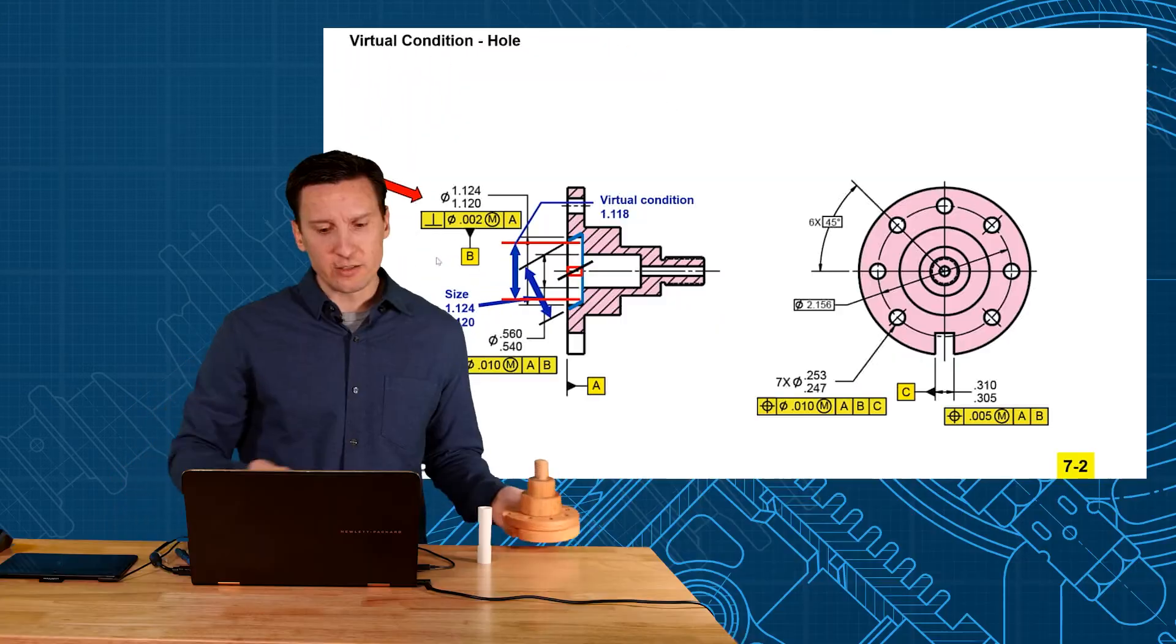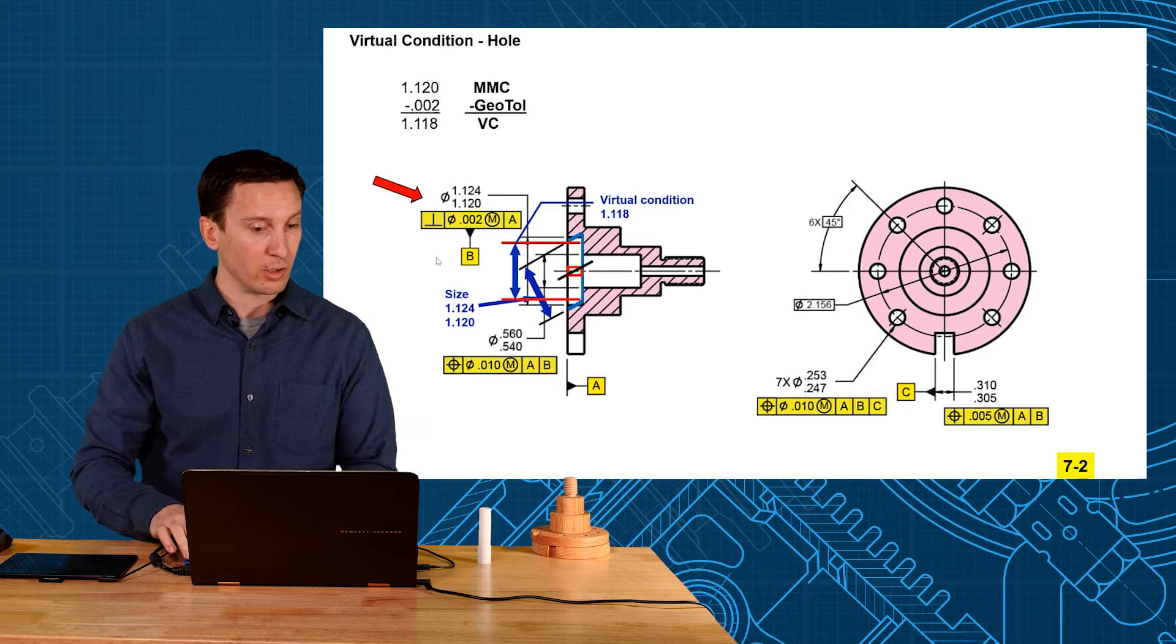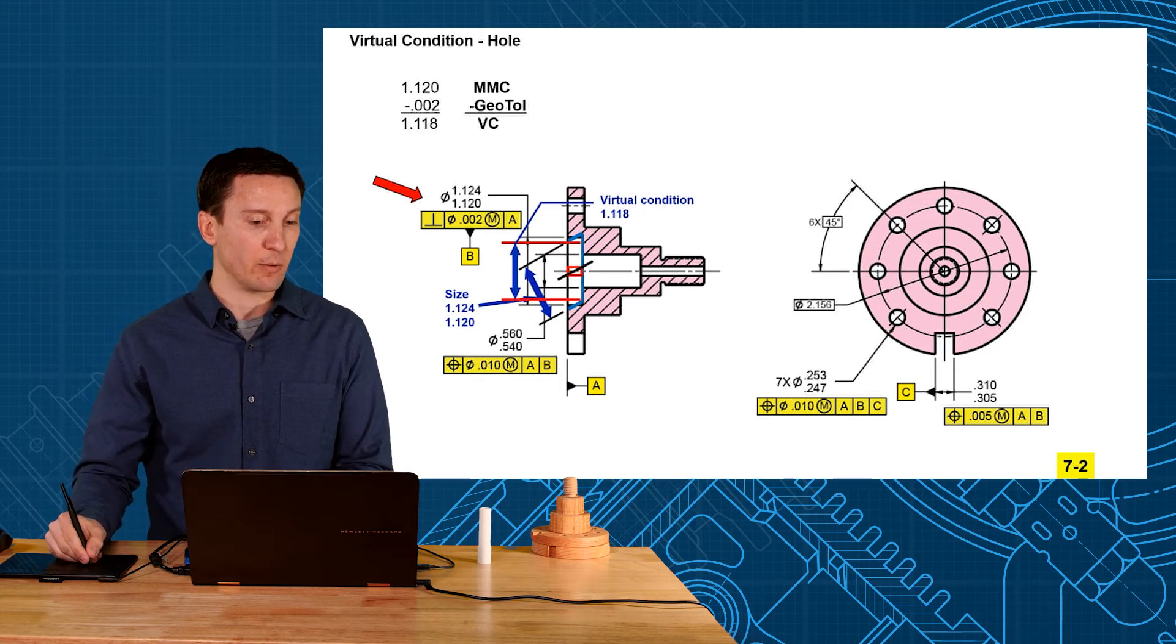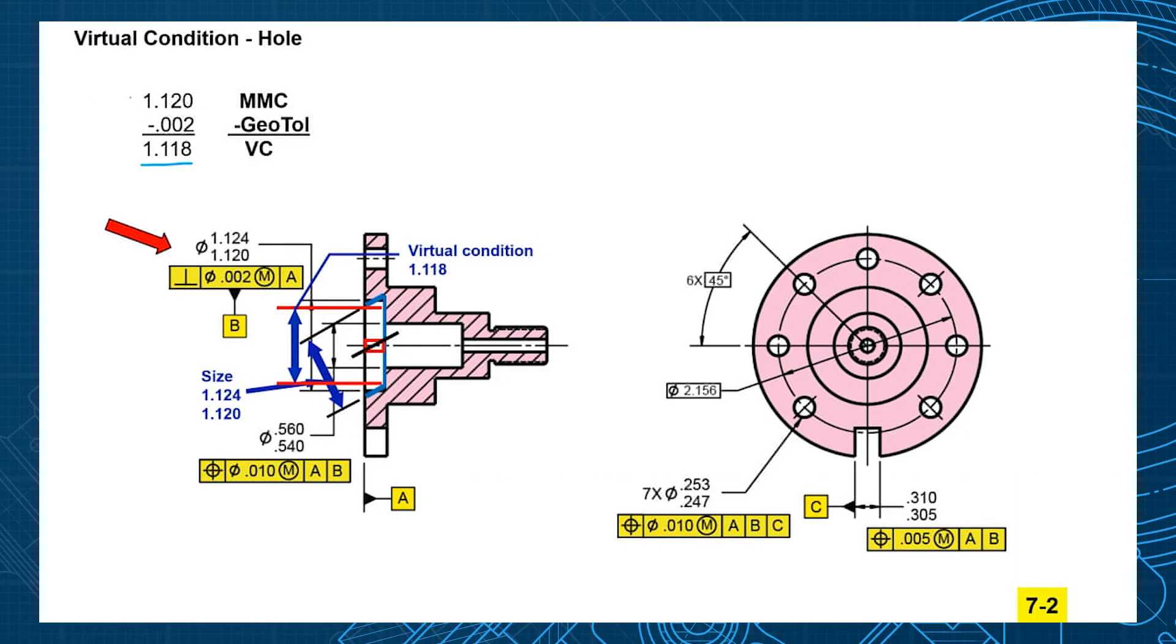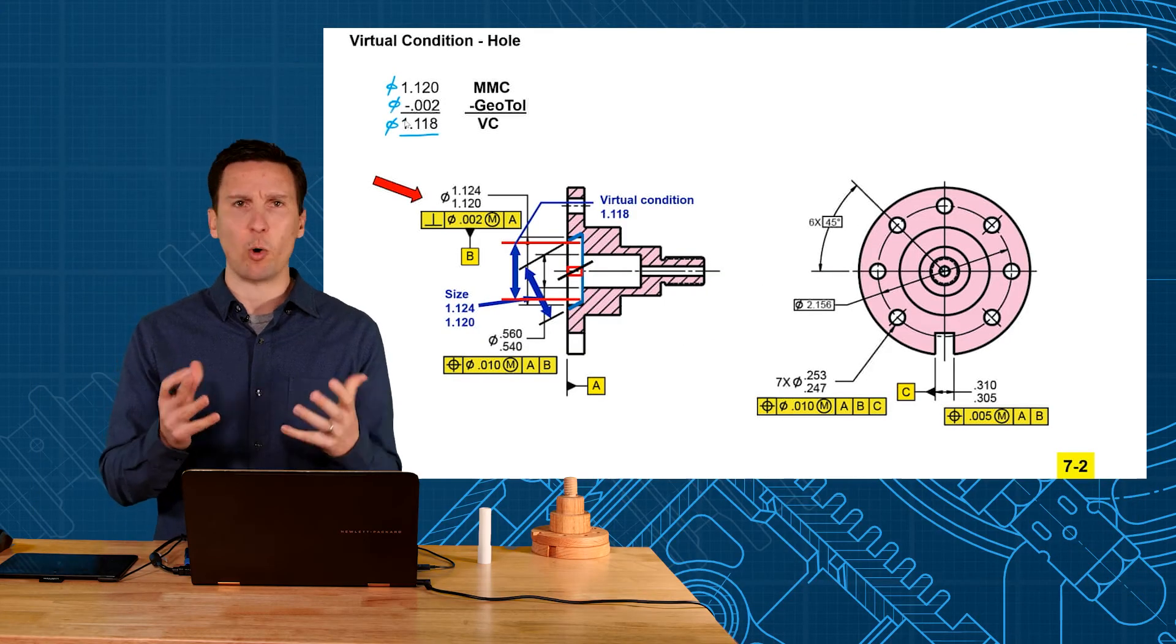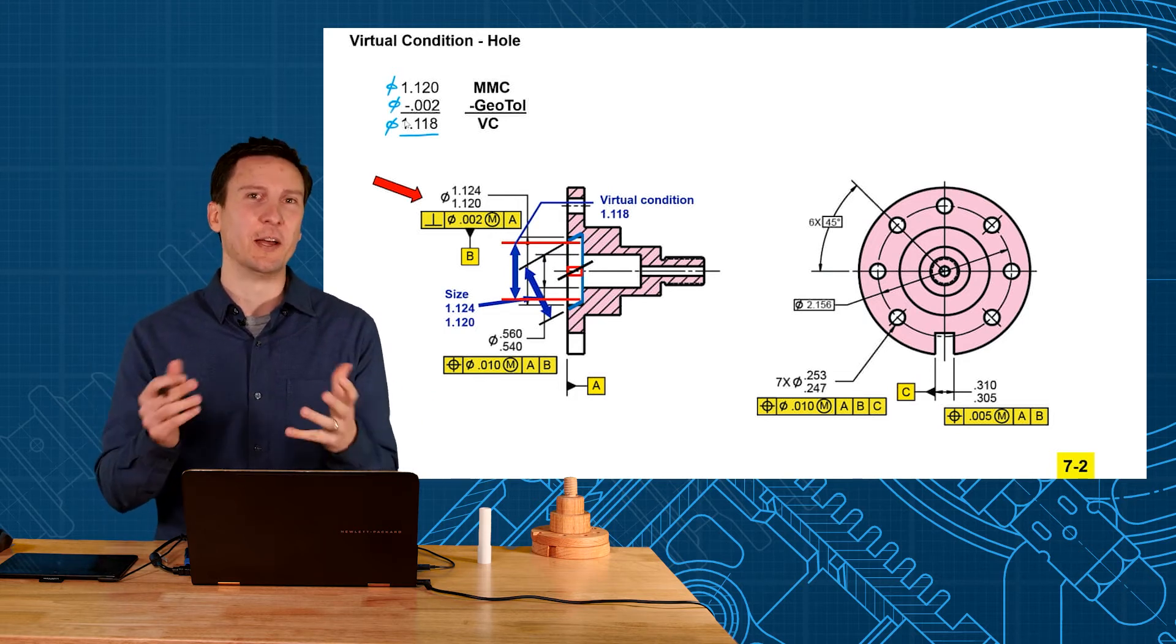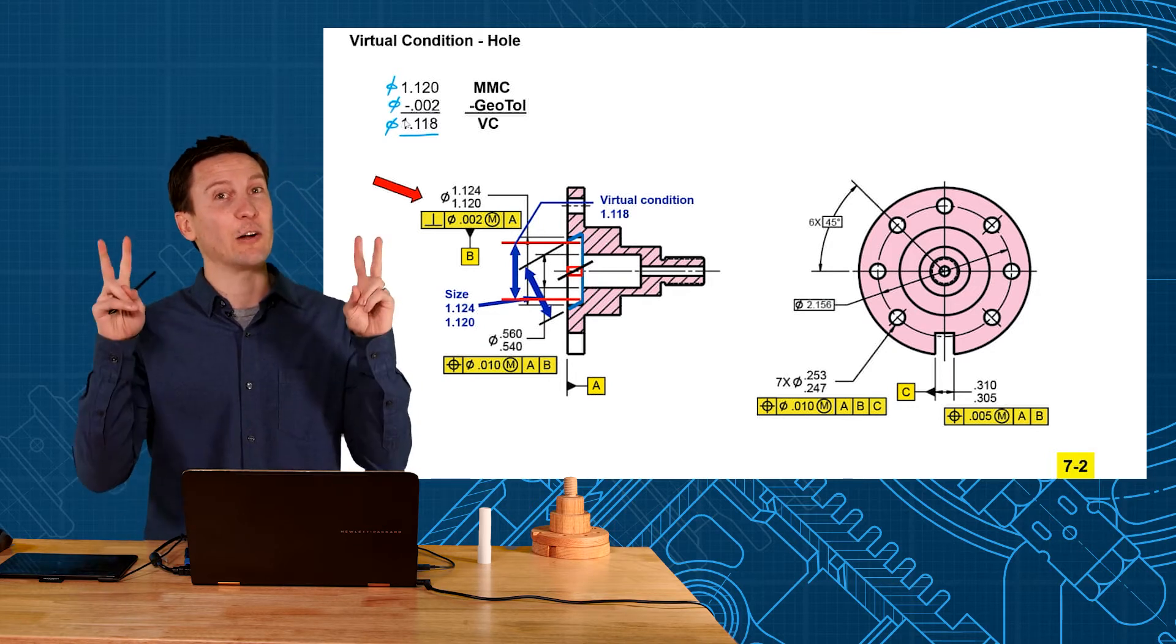And it's a real easy number to calculate 1 inch 118 we just take our smallest hole that's our MMC 1 inch 120 and then subtract out the geometric tolerance here is 2,000 and that will arrive at our virtual condition. Since this is a diameter and this is a diameter this pops out a diameter as well. Now it's important to note the hole cannot get that small. If you made a hole that small you get rejected it's too small. This is the smallest hole minus the perpendicularity what appears to look like virtually.